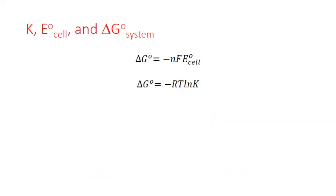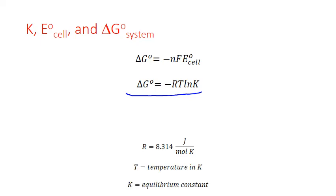In the last unit, we also defined the relationship between the standard Gibbs free energy change for any process and its equilibrium constant K. The standard Gibbs free energy change is equal to the negative of R — the gas constant in joules per mole Kelvin — times temperature in Kelvin, times the natural log of K, the equilibrium constant.